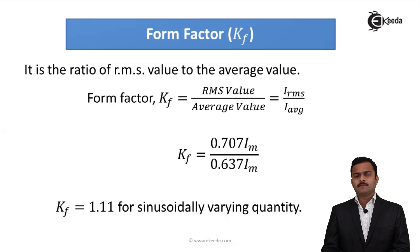Kf can be seen as 0.707Im divided by 0.637Im. We know I_RMS is 0.707Im, so instead of I_RMS I put 0.707Im. Instead of I_average, it is 0.637Im. Im is a constant term which I can cancel out, so we're left with Kf = 0.707/0.637.